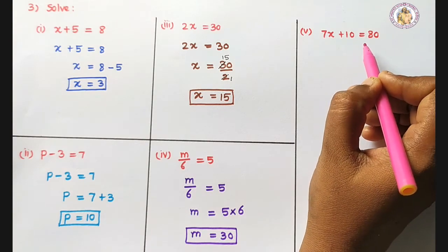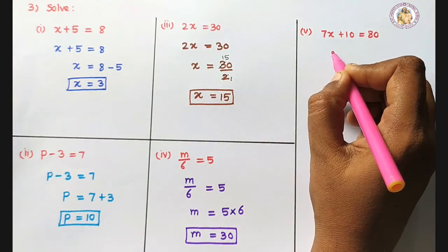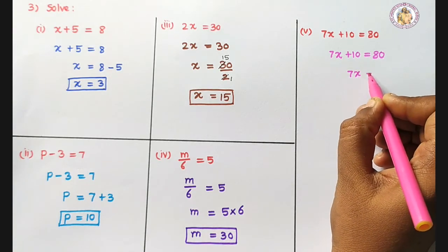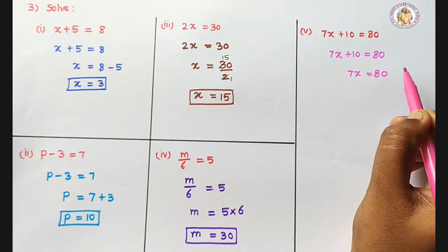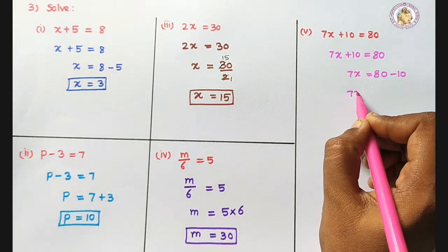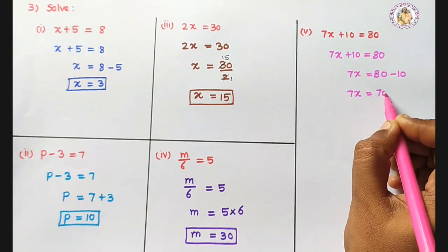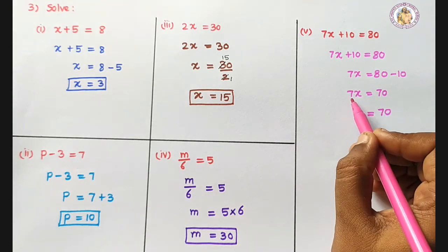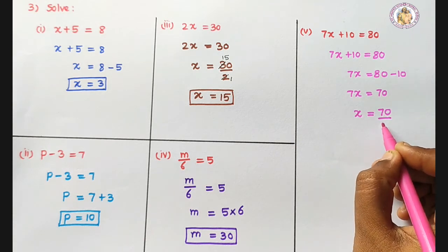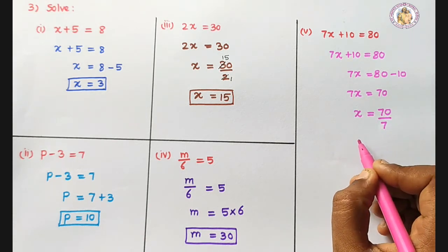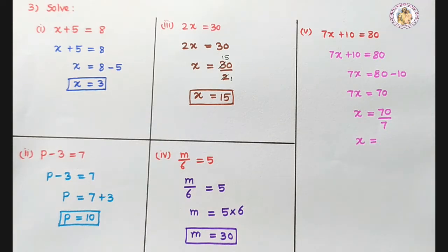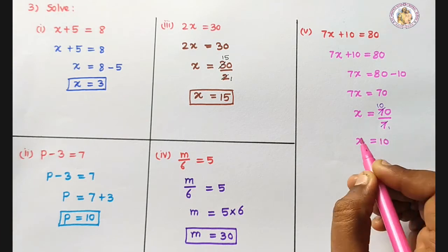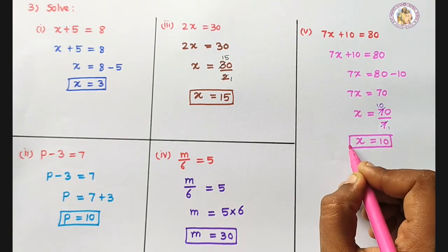Next: 7x plus 10 equals 80. Bring plus 10 to the other side — it becomes minus 10. So 7x equals 80 minus 10, which is 70. Now 7 is in multiplication, so bringing it to the other side means division: x equals 70 divided by 7, which equals 10. So the value of x is 10.